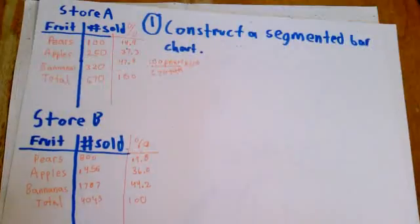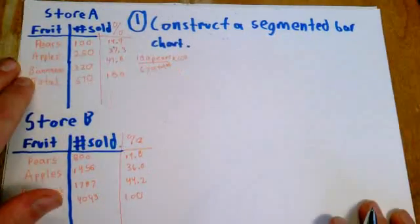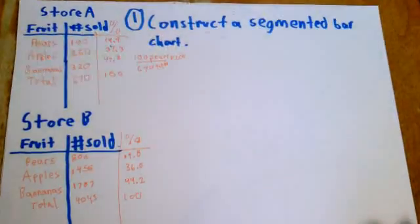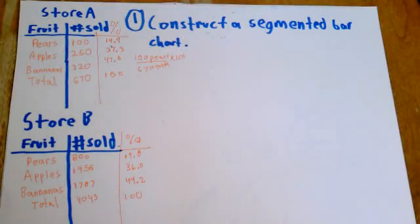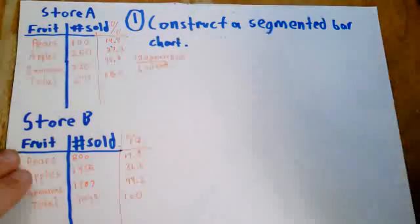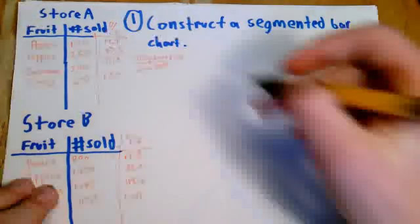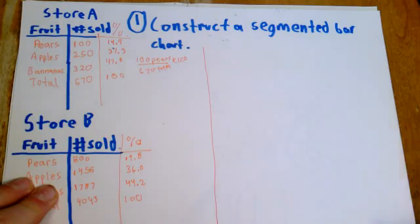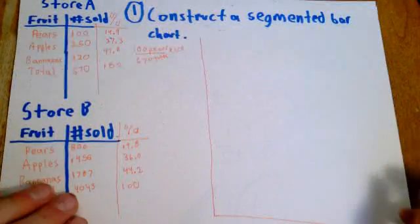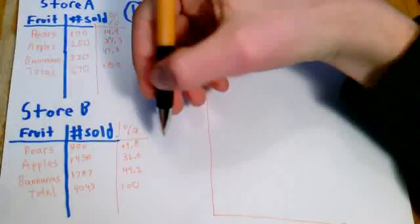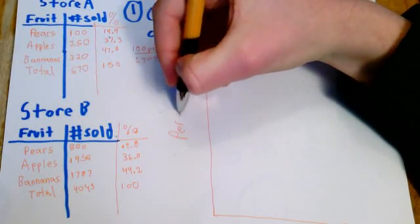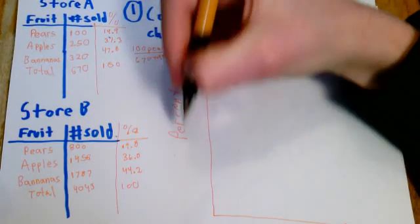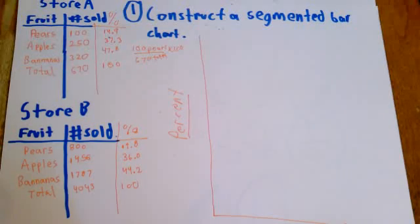All right. Now the question here, number one, asks to construct a segmented bar chart of these stores. So to construct a segmented bar chart, you start just like a regular bar chart and draw an x and y axis. But similar to a relative frequency bar chart, you're going to use percents on the y axis. However, different from a relative frequency bar chart, you're going to go up to 100%.